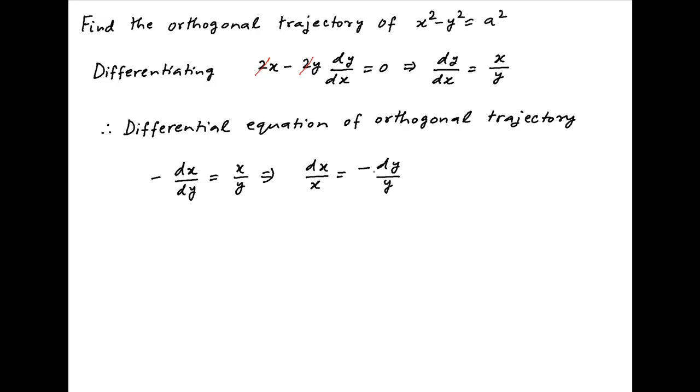Separating the variables, we get dx upon x is equal to minus dy upon y. Integrating both sides and adding a constant of integration, say ln c on the right-hand side.